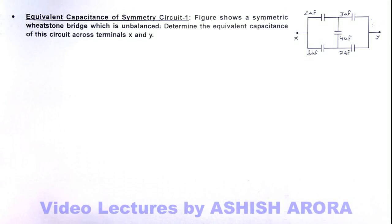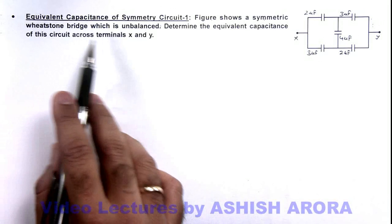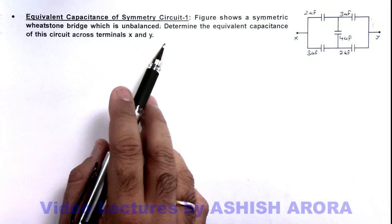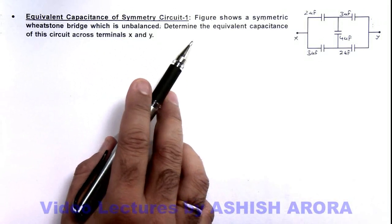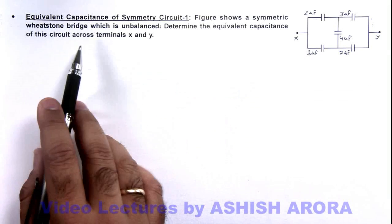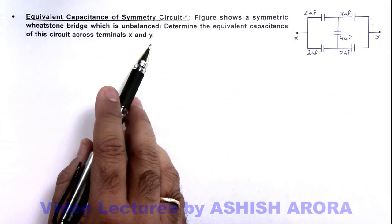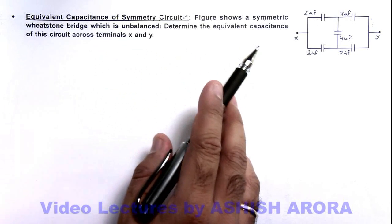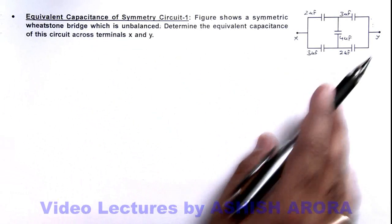In this illustration we are going to discuss the equivalent capacitance of symmetry circuits. Here we can see the figure shows a symmetric Wheatstone bridge which is unbalanced, and we are required to determine the equivalent capacitance of this circuit across terminals x and y.